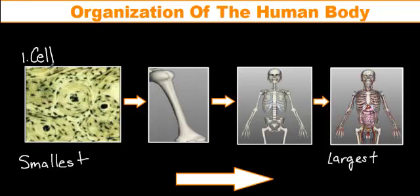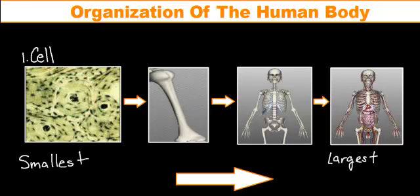As we learned earlier this year, the cell is the basic unit of life. In this picture below, we can see bone cells. This cell in the middle here is an example of a single bone cell, which is actually called an osteocyte. Once you get two or more cells working together to perform a specific function, then you get our next level of organization: the tissue.